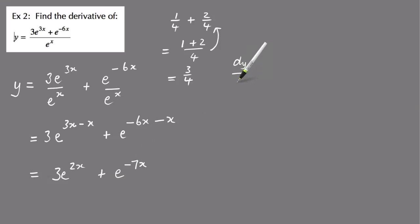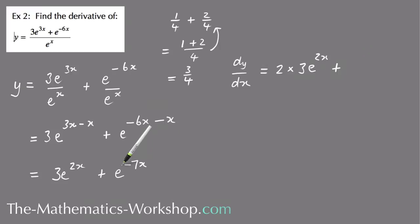So dy dx, deriving each of those terms one at a time, so the derivative of this one is 2, and you times it by that 3, and then by e to the 2x, plus the derivative of this part here is minus 7, and you times it by the original thing, e to the minus 7x.